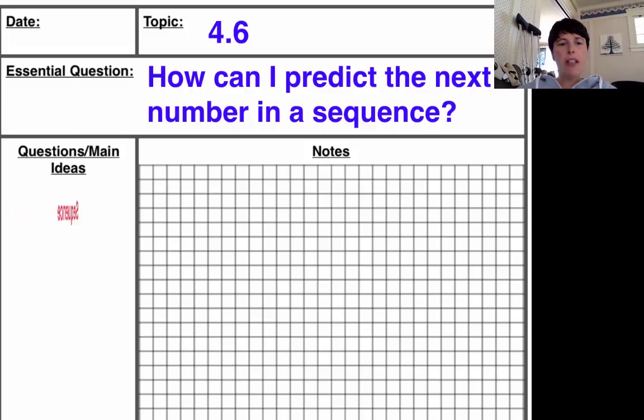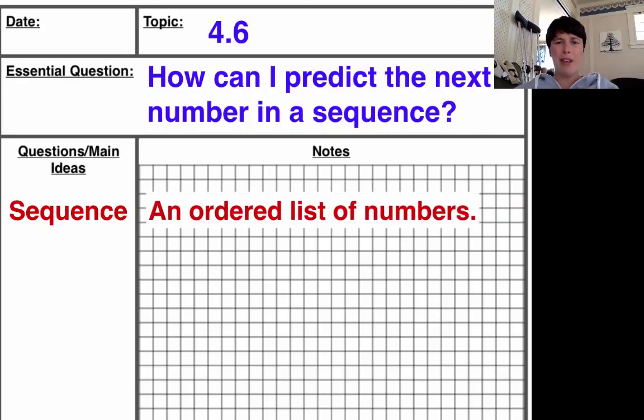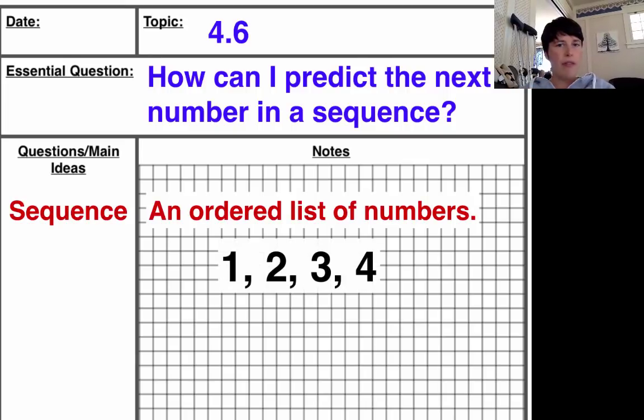So what is a sequence? Well, let's write that down as a main idea. To be honest, a sequence is just a list of numbers that's put in order. So I'm writing down as my definition, it's an ordered list of numbers. And it can be super simple. It could be as simple as 1, 2, 3, 4. That's a list of numbers. It's in order. It's a sequence.